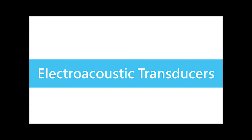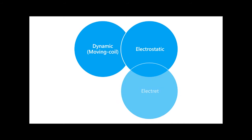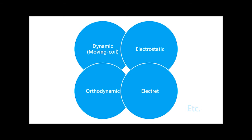We can separate earphones into various types by transducers, like dynamic, or you can call it moving coil, electrostatic, electret, orthodynamic, etc.